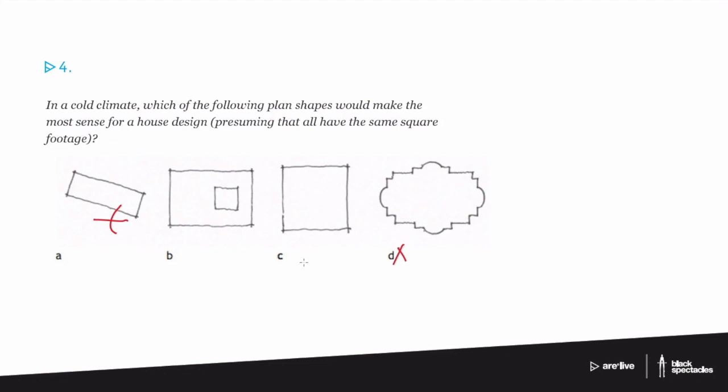So the question becomes, what are the issues of a cold climate? The biggest issue is it's cold and you don't want to lose heat out of your walls. So you want the most efficient of the building plans that have the least amount of heat loss per square foot of building.